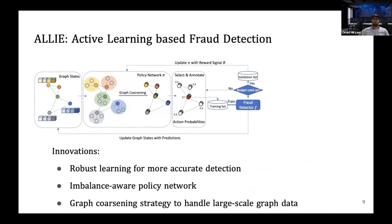We propose an active learning based method for online fraud detection in shopping websites called Ali. It can effectively select informative unlabeled samples for labeling by maximizing the performance of the fraud detector. Our method has the following innovations: first, our approach gives labeling priority to less confident and underrepresented samples for more accurate detection; second, it works well with imbalanced data; third, to scale our approach to large graphs, we use a graph coarsening strategy, SAC Pool.